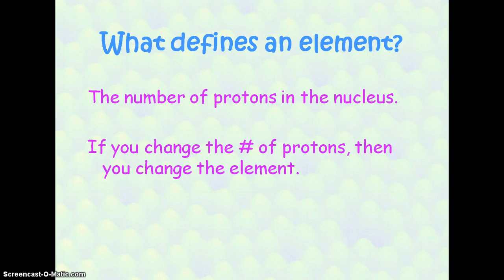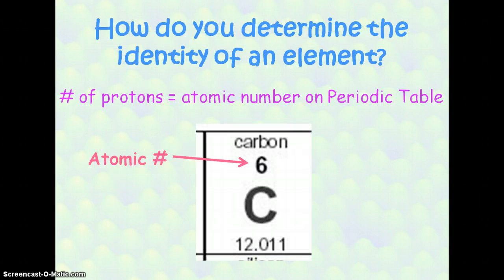What defines an element? The number of protons in the nucleus tells you what element you have, so the specific number of protons is specific to a certain element. If you change the number of protons in the nucleus, then you've just changed the element. If we know the number of protons, then we also know the atomic number. The atomic number is the top number, or the whole number, on the periodic table. Carbon has an atomic number of six, which means carbon has six protons.